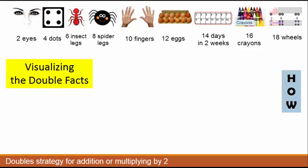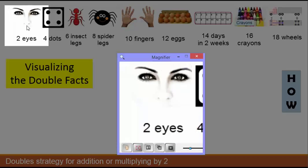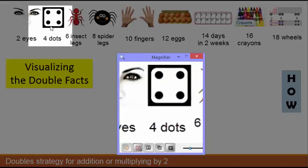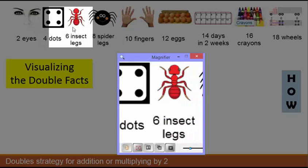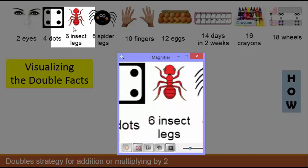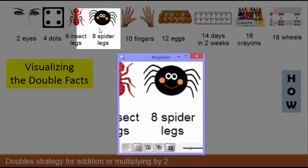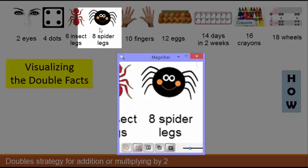The third suggestion is to visualize the double facts. Here we see that two eyes is 1 times 2, which is 2. Four dots on the die is 2 plus 2. Six legs on an insect. A spider is 4 plus 4 is 8.